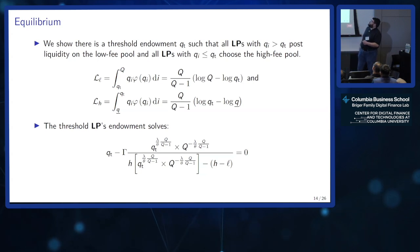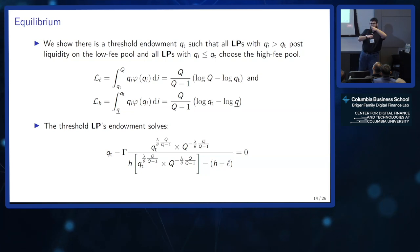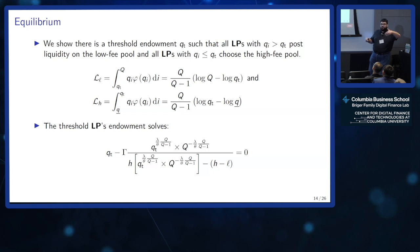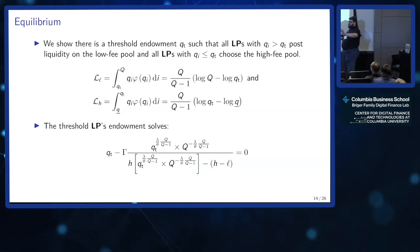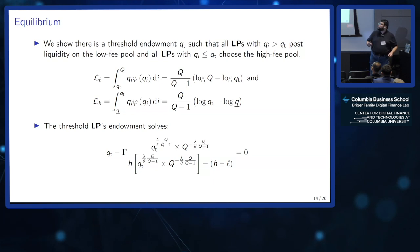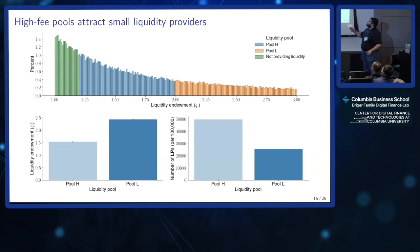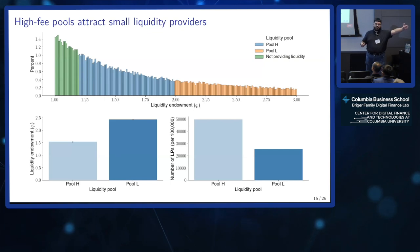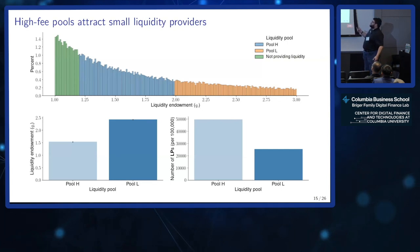We show there is a threshold endowment such that everybody with a large endowment — who can afford a fast cycle — will go to the low-fee pool, providing liquidity competitively. Everybody small enough — who really wants to save on fixed costs — will go to the high-fee pool and accept being executed less often. The marginal trader solves an equation that has exactly one solution. Graphically, very small LPs may stay out of the market altogether because they can't afford the gas fees.